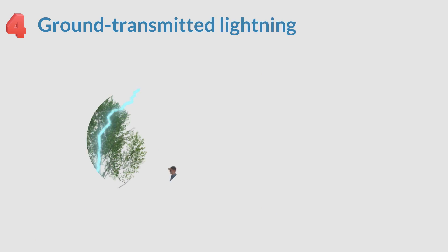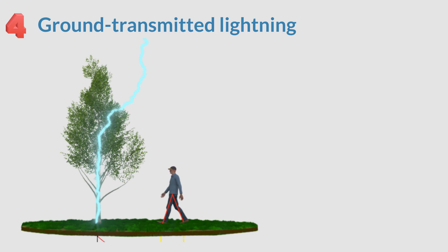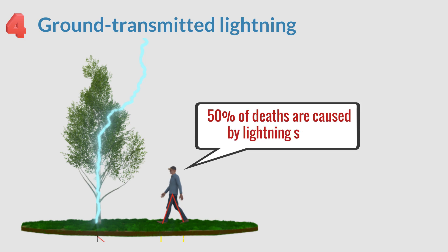And the last most common type is ground transmitted lightning. Specifically, when lightning strikes the ground, an electric current will spread across the ground and into your body. This type is extremely common, more than 50% of deaths due to lightning strikes fall into this type. Notably, the current of lightning can be dangerous to you within a 10 meter radius.